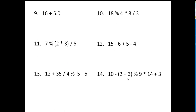Number 9: 16 plus 5.0 is not 21, because one of the operands is a double, so the answer has to be a double — it's 21.0. You'll see how important that is later on as we do our programming.